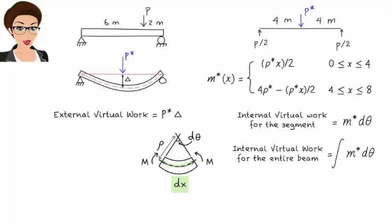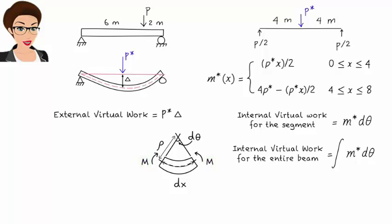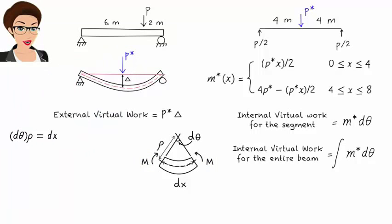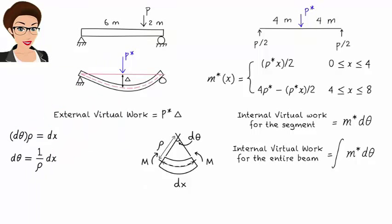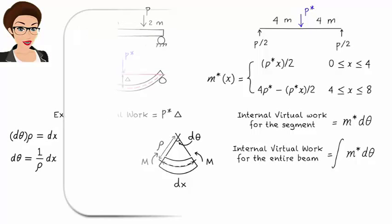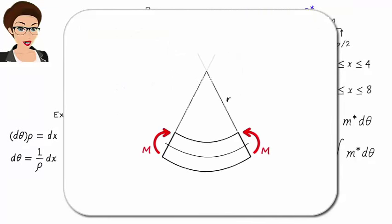Also, let's refer to the radius of the circle containing the arc length as rho. Keep in mind that this deformation is caused by the bending moment produced by the real load, shown as M. Using simple geometry, we can write d theta times rho equals dx, or d theta equals 1 over rho times dx. Now we need to express rho using more familiar terms. There is an interesting relationship between rho and M.